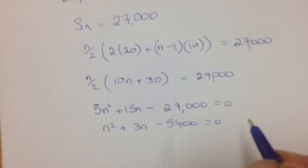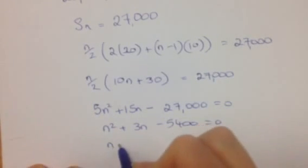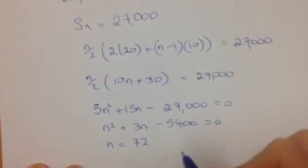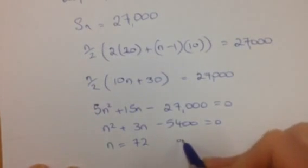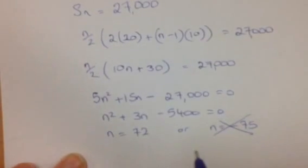You're going to solve that and eventually you'll end up with n equals 72. You could use the minus b formula or n equals minus 75 which is not a possible solution in this question.